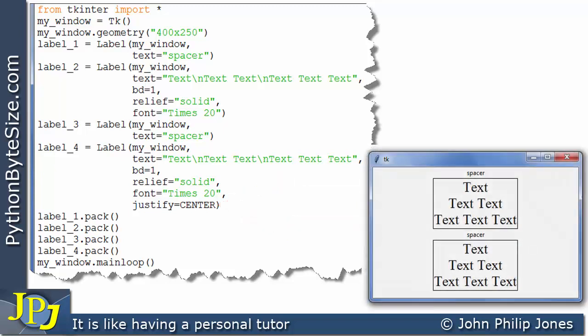When this program runs, what we're going to see is the following. You can see that label 4, shown here, has all of the text centered. That's simply because we have put justify assigned CENTER here.